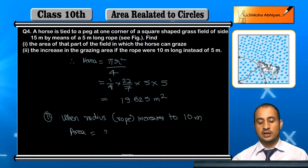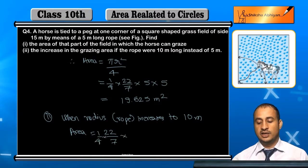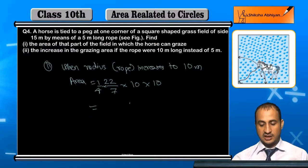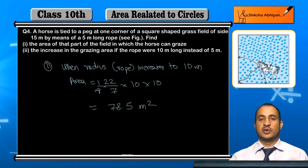Area equals π into 10 squared divided by 4. Here we will do the calculation. The area will be 78.5 meters square. Now the horse will be able to graze this much area when the rope is 10 meters.